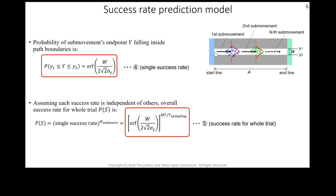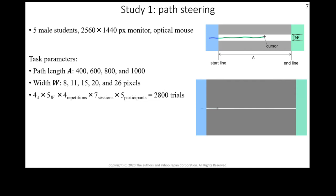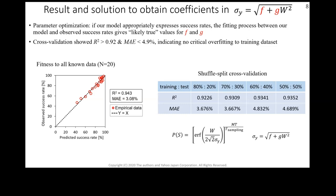This study 1 follows the method of classical steering law experiment with a mouse. We tested 4 path lengths A and 5 path widths W. To obtain the coefficients F and G, we adapt parameter optimization.